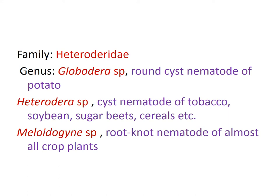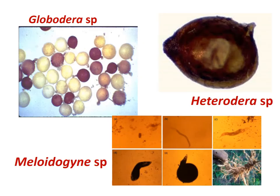The common nematode is Meloidogyne species — the root knot nematode — having different species like Meloidogyne incognita, Meloidogyne javanica, Meloidogyne arenaria, and hapla. Also Meloidogyne graminicola infecting wheat. The first diagram shows the round cyst nematode Globodera, globular in shape, infecting potatoes. Next is Heterodera — you can see the color of the cyst. The cyst nematodes protect their eggs inside the cyst. The next one is the root knot nematode Meloidogyne, which forms galls in roots, showing eggs and different larval stages.